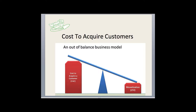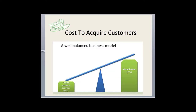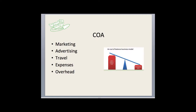You want to make sure that the cost to acquire a customer is less than your monetization. People in different industries will make different amounts of revenue per sale, so you want to figure out what your cost to acquire a new customer is and what your monetization is and work from there. If you have low monetization, you may need to acquire two new customers to offset your cost.